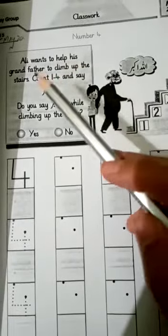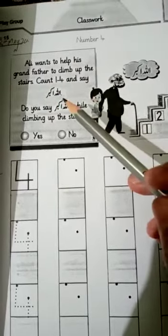Tick the correct one. Today our topic is number four. Ali wants to help his grandfather to climb up the stairs. Count one to four and say Allah Hu Akbar.